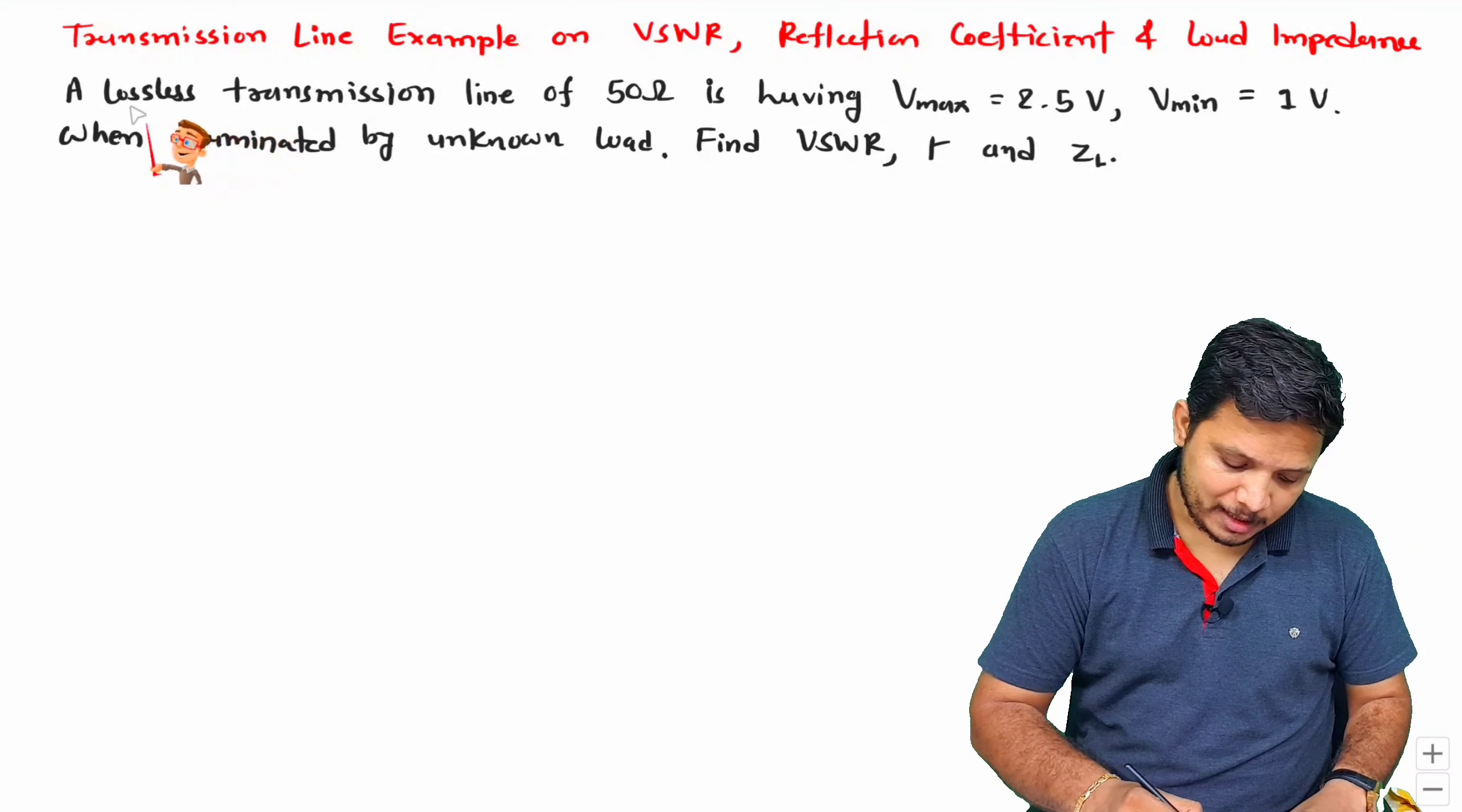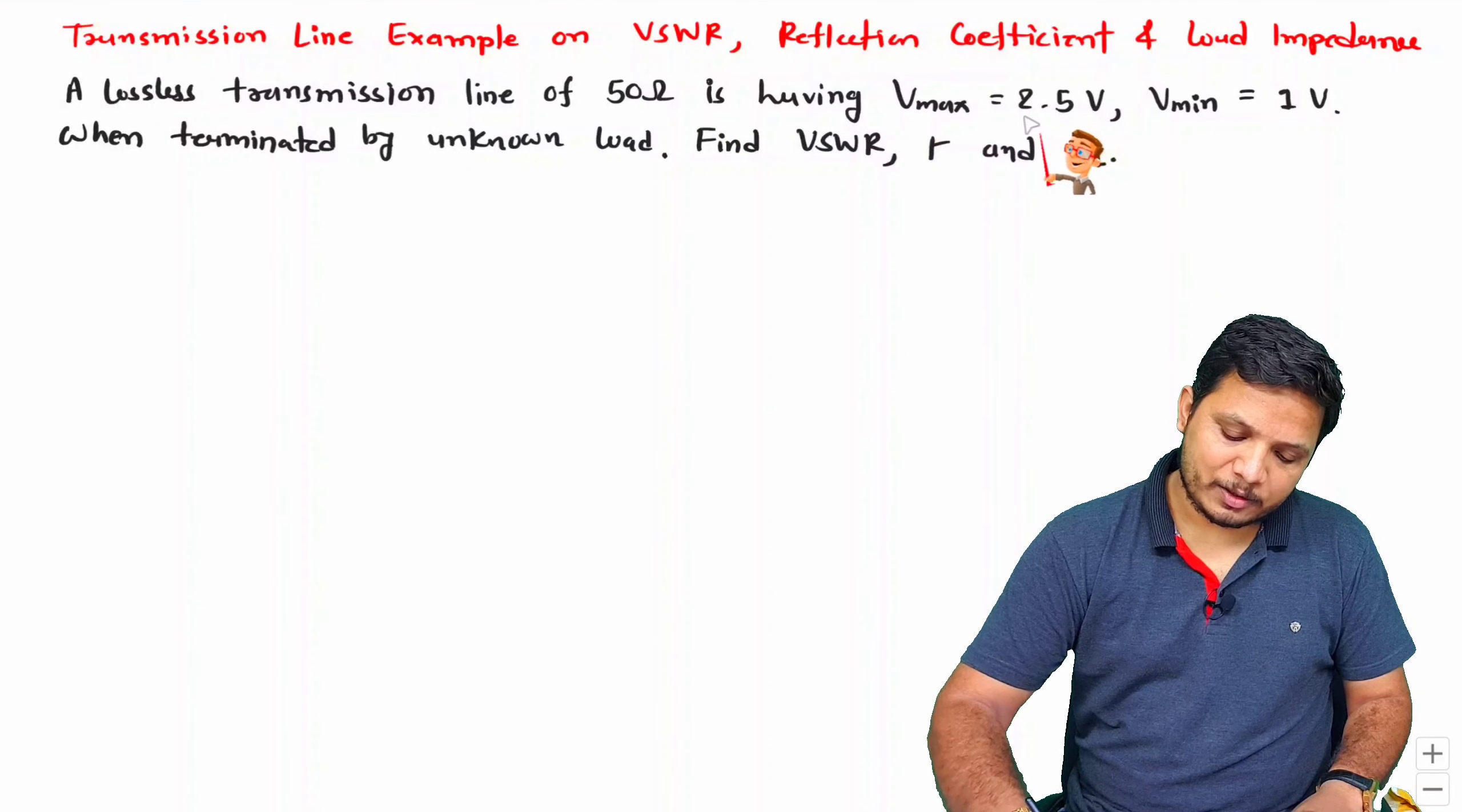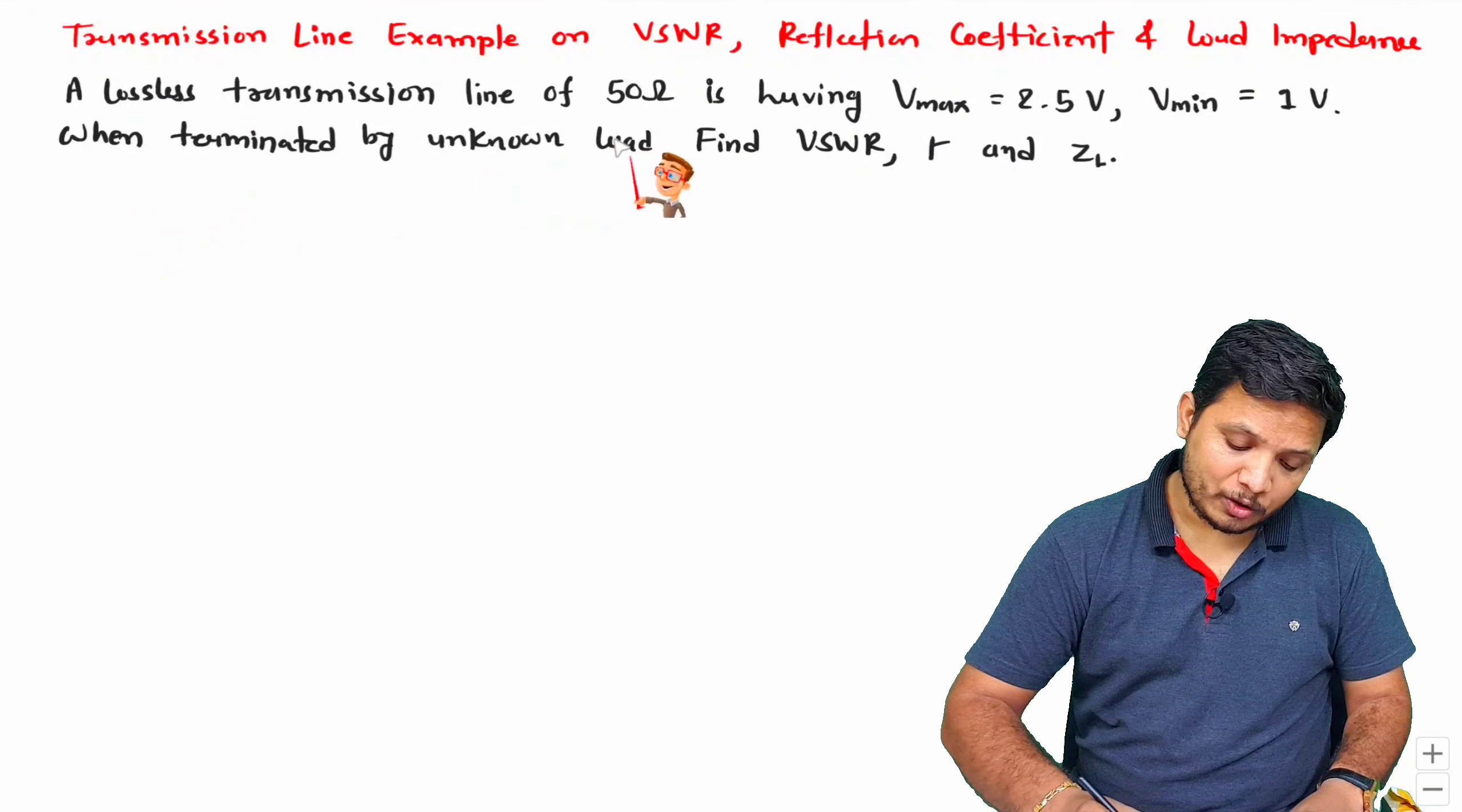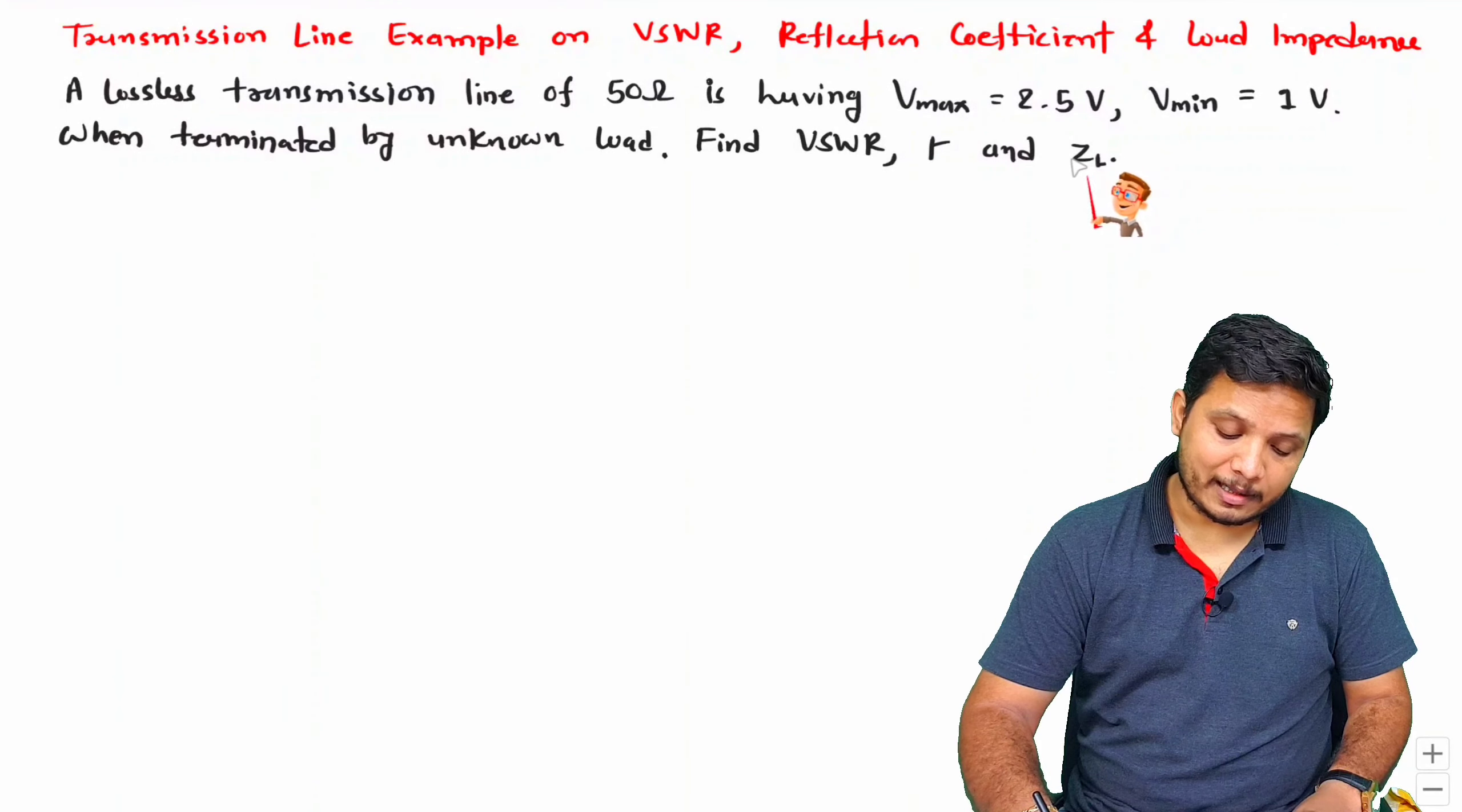So we have a question in which a lossless transmission line of 50 ohm is given, having Vmax equal to 2.5 V and Vmin equal to 1 V. When terminated by unknown load, we need to identify VSWR, which means voltage standing wave ratio, reflection coefficient rho, and load impedance ZL.